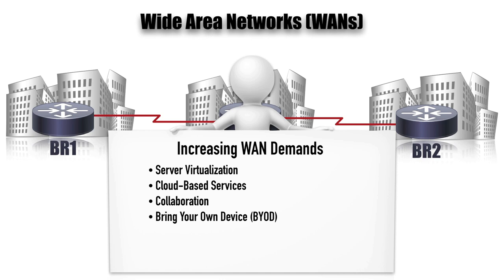Those people might be streaming Netflix to their iPad during their break, and these devices can start to eat up WAN bandwidth. Guest access at remote offices is another administrative issue — we want guests on the network while securing them from our production network, but they may be using our WAN bandwidth as well.